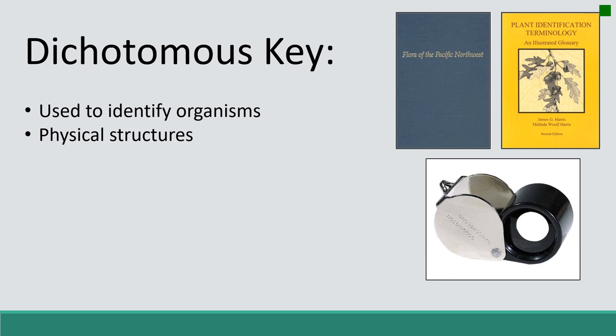When using a dichotomous key, I always recommend having a plant identification terminology book or a glossary. These are really important because there are a lot of terms that you'll probably be unfamiliar with. I know I'm still unfamiliar with a lot of terms, so I use my glossary a lot when I'm out in the field. We'll get some examples of those as we go through today's exercise.